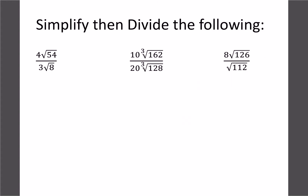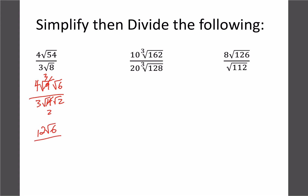Now let's try some where we need to simplify first because they don't divide out evenly. Root 54 over root 8: 54 is 9 and 6, and 8 is 4 and 2. Simplifying gives 12 root 6 on top and 6 root 2 on the bottom, and those divide out to give 2 root 3. Simplifying first definitely helps.